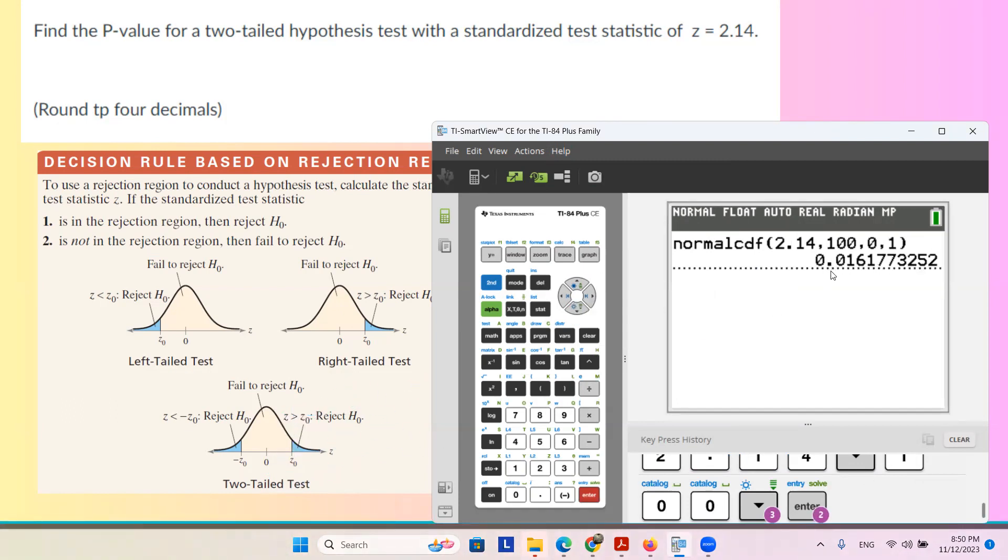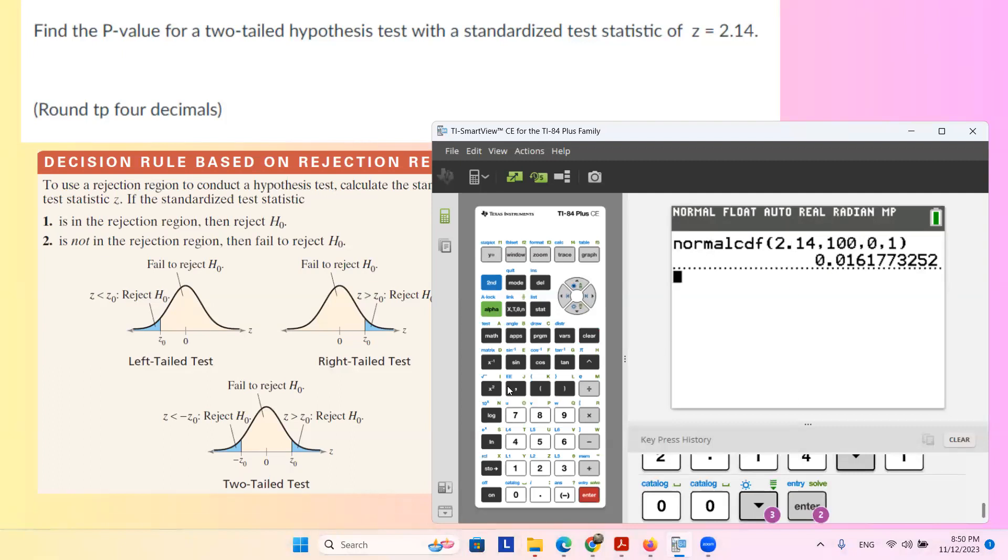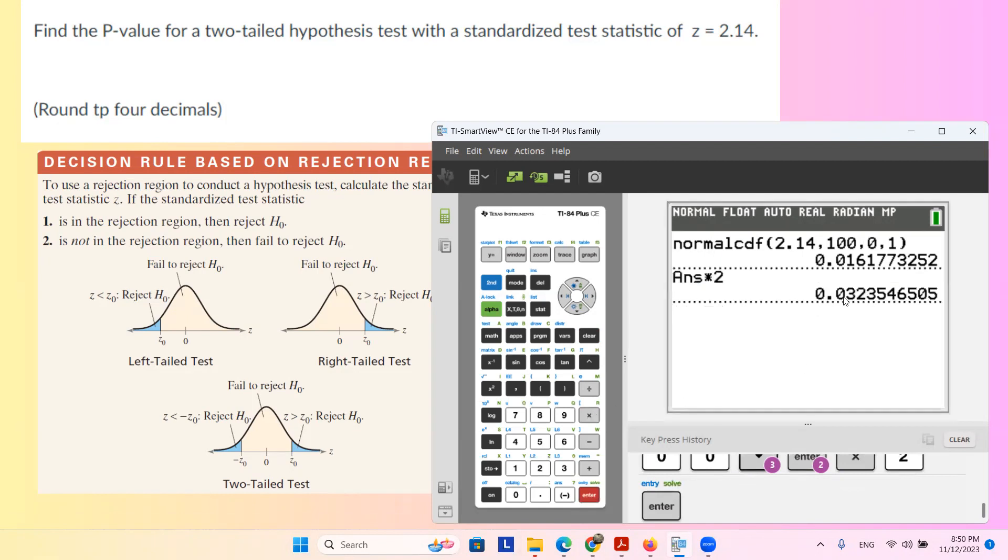Take this number and multiply that number by 2. So let me find multiplication. And when you multiply by 2, you have 0.03235.